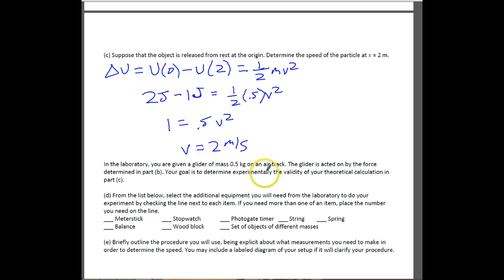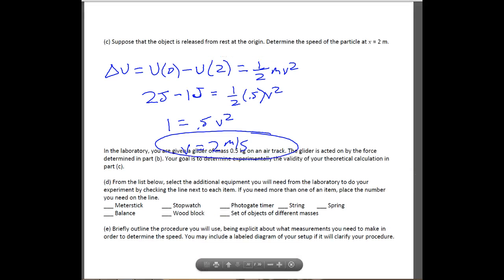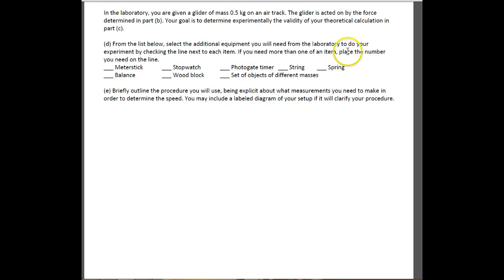The next part: in the laboratory you're given a glider of mass 0.5 kg on an air track, affected by the force from part B. Your goal is to experimentally validate the theoretical calculation from part C. You need to select equipment from the list — only check what you'll actually use, because in part E you must use those items.